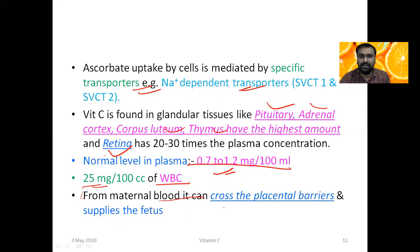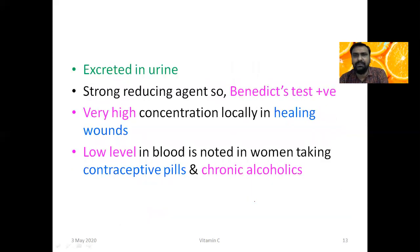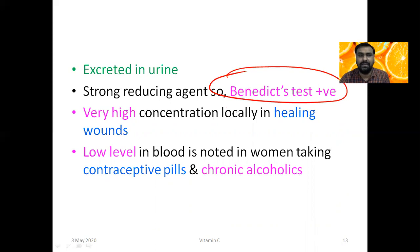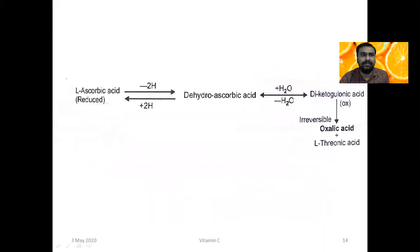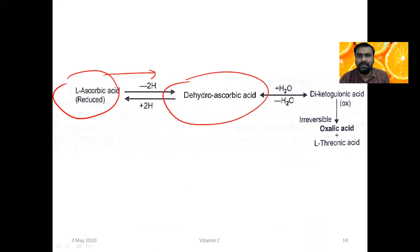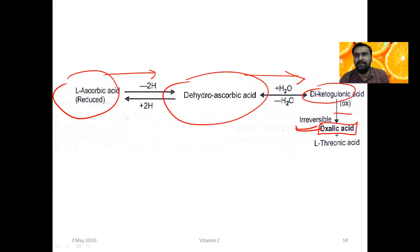The normal plasma level is 0.7 to 1.7 milligrams per 100 mL, and in WBCs it is present at 25 milligrams. It can cross the placenta from maternal blood. It is excreted in the urine and gives a false positive Benedict's test. The level is increased in healing wounds and decreased in patients taking contraceptive pills or with chronic alcoholism. Ascorbic acid is oxidized to dehydroascorbic acid, then converted to ketogulonic acid, and finally irreversibly to oxalic acid — this is how Vitamin C is related to oxalic acid.